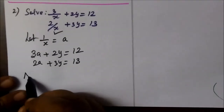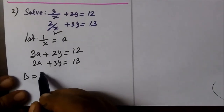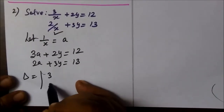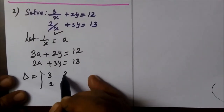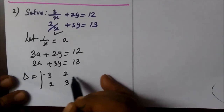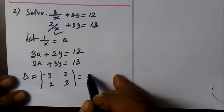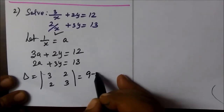Then, what do we do? Del. So, the matrix is 3, 2, 2, 3. Cross multiply by 3: 3 times 3 equals 9, then 4.